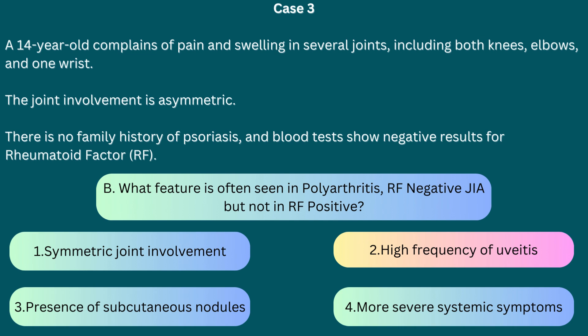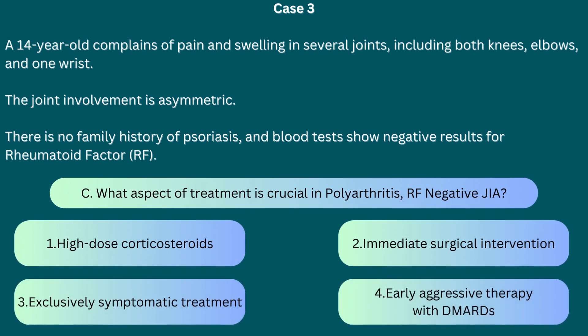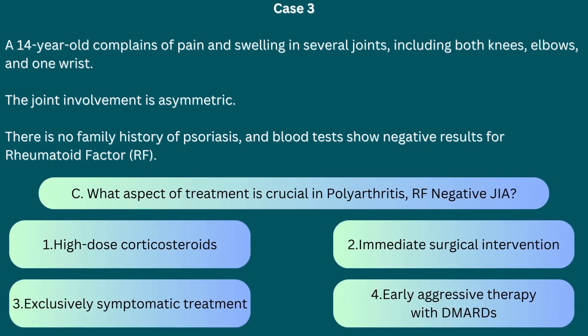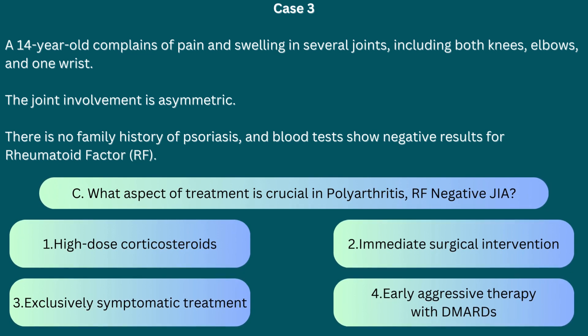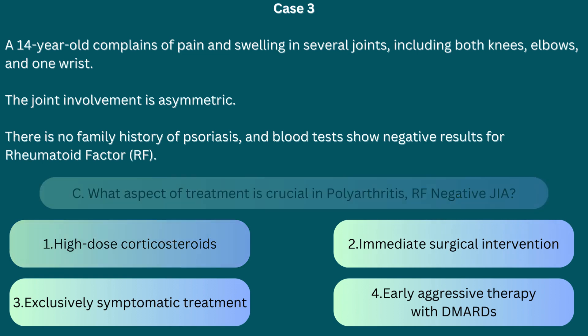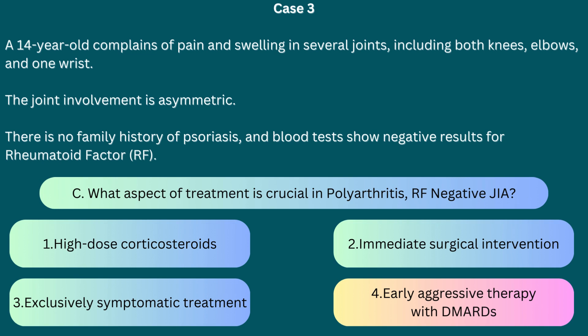Therefore, rheumatoid factor negative JIA requires regular ophthalmological examinations to monitor for uveitis. Question C: What aspect of treatment is crucial in polyarthritis rheumatoid factor negative JIA? 1. High-dose corticosteroids, 2. Immediate surgical intervention, 3. Exclusively symptomatic treatment, 4. Early aggressive therapy with disease-modifying anti-rheumatic drugs. The correct answer is 4. Early aggressive therapy with DMARDs is essential to control joint inflammation, prevent joint damage, and maintain function. Despite this subtype having a less severe course than RF-positive, adequate disease control is still crucial to prevent long-term complications.